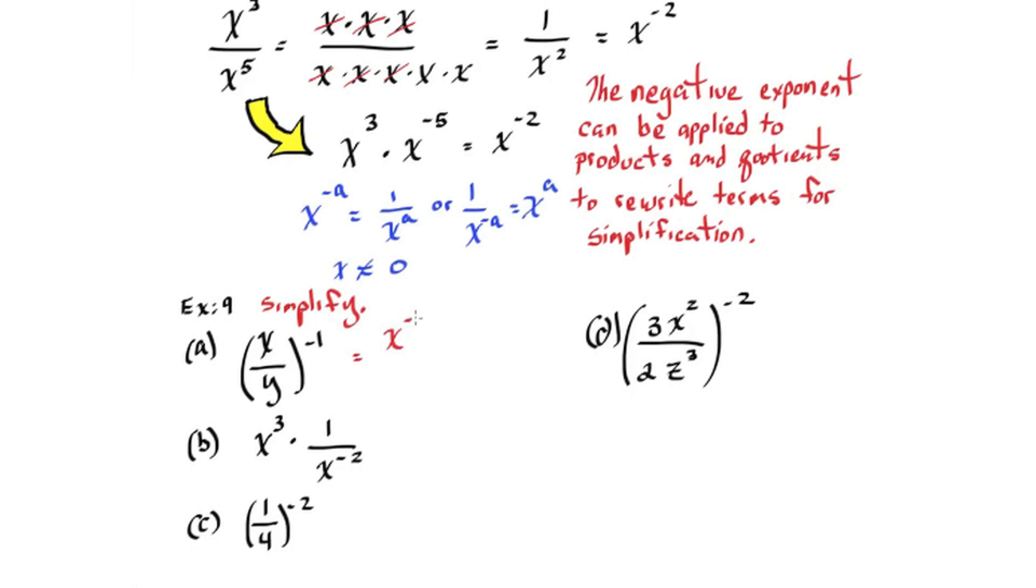Simplifying in this case means get rid of that negative exponent. So basically if we take the reciprocal of these terms we'll remove the negative. Negative 1 over 4 to the negative 2 is the same as 4 to the positive 2 which is 16. We can also use the power of a power rule and distribute the negative 2 on part d into the exponents and all the basis as I've done here.